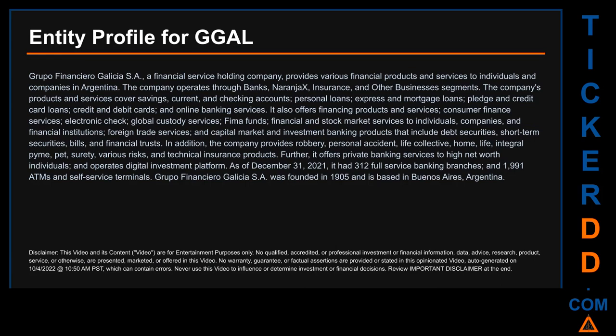The company also offers consumer finance services, electronic check, global custody services, FEMA funds, financial and stock market services, foreign trade services, and capital market and investment banking products including debt securities, short-term securities, bills, and financial trusts. Additionally, it provides robbery, personal accident, life, collective home, life integral, PYME, pet, surety, various risks, and technical insurance products. It also offers private banking services to high-net-worth individuals and operates a digital investment platform. As of December 31, 2021, it had 312 full-service banking branches and 1,991 ATMs and self-service terminals. Grupo Financiero Galicia SA was founded in 1905 and is based in Buenos Aires, Argentina.